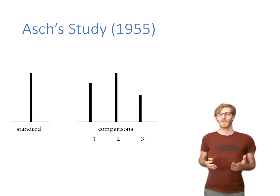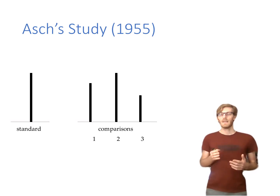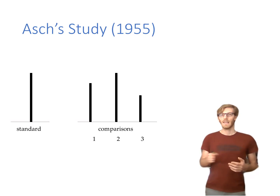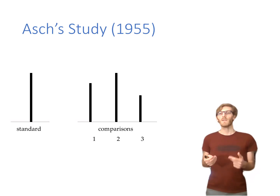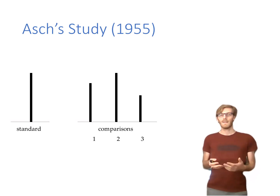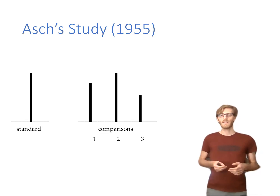However, this wasn't done in isolation. Since it was about group influence, Asch brought people into a lecture theater where they were sitting in rows and had to give the answer one by one. Unbeknown to the participants, Asch had confederates — twelve in some iterations, sometimes other numbers — sitting in the first row. They all gave their answer before the actual participant was asked.